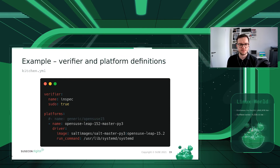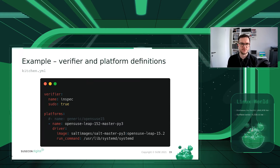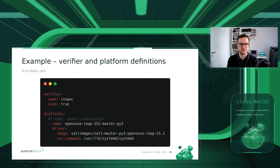Next, we configure the verifier — in this case InSpec, used with root permissions via sudo. We also specify platforms. There's a commented-out entry pointing to a generic openSUSE 15 Vagrant box from HashiCorp Vagrant Cloud. For the Docker approach, a specific Docker image crafted by the Salt community is used: an openSUSE Leap 15.2 container image with Python 3, and the run command is set to systemd to enable SSH connectivity.